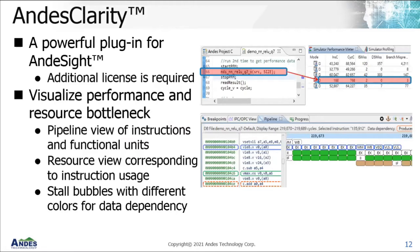AndesKlarity is a powerful plugin for AndesITE. It lets you visualize your CPU pipeline and find the bottleneck of your system, then go and optimize it further to achieve better performance overall. You can have the pipeline view of instructions and functional units, and switch between resource-centric and instruction-centric views. There will also be colored bubbles to let you understand the data dependency between two instructions. Note that AndesKlarity requires an additional license to use with AndesITE.